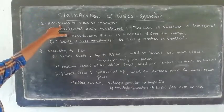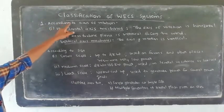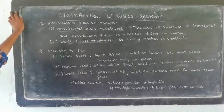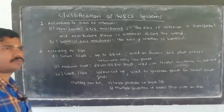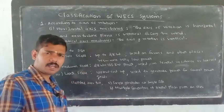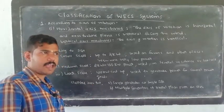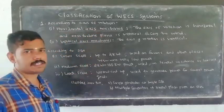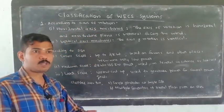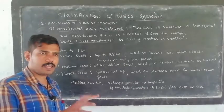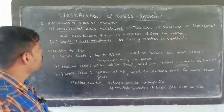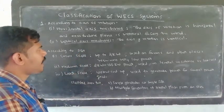In this class, according to axis of rotation, wind energy conversion systems can be classified into two types. One is the horizontal axis machines, where the axis of rotation is horizontal. We call this wind energy conversion system the horizontal axis machine.